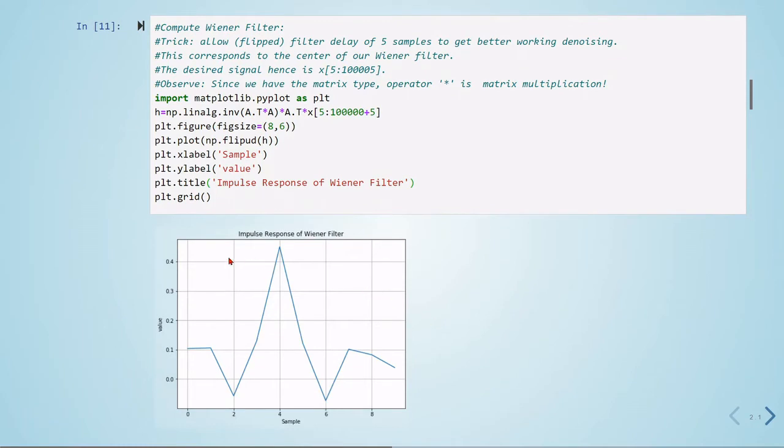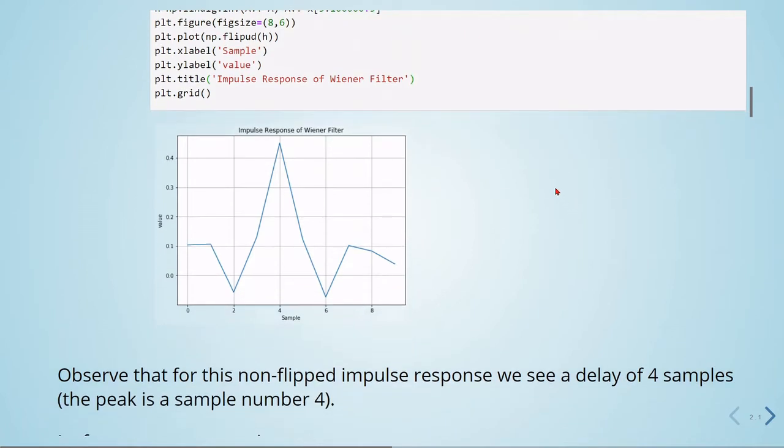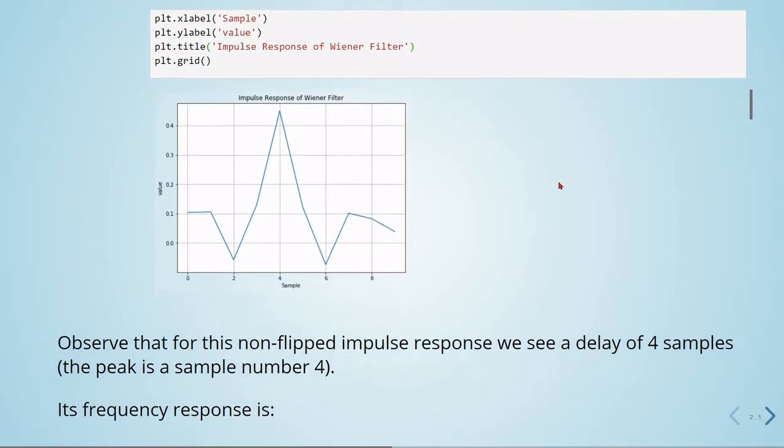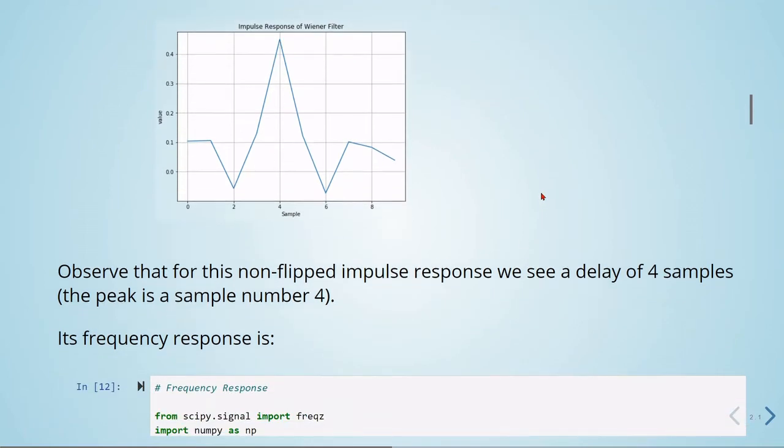Here is the impulse response of our Wiener filter. Observe that this is the non-flipped impulse response, and we see that we have a delay of 4 samples, so the peak is at sample number 4.